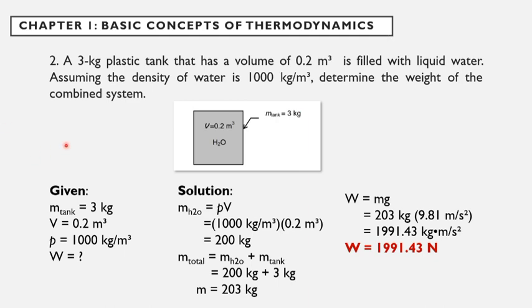In order to get the weight of the system, we have to find first the total mass. So using the equation, mass of the water is equal to density times the volume. So we have 1,000 kg per m³ times the volume which is 0.2 m³. So we can obtain the mass of the water is equal to 200 kg.